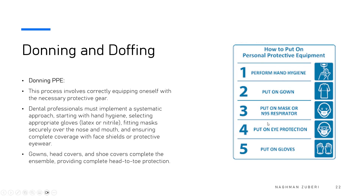Let's see the sequence for how to put on personal protective equipment: Number one, perform hand hygiene. Then put on gown. Put on the mask or N95 respirator. Put on eye protection. And finally, put on the gloves.